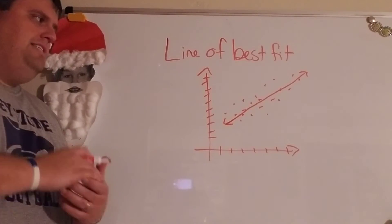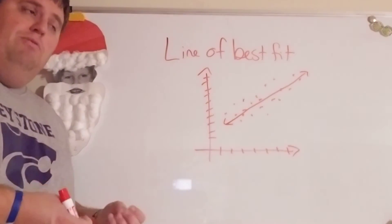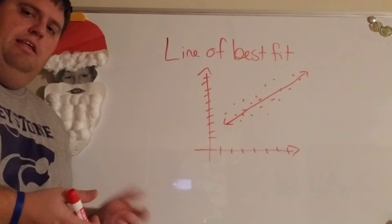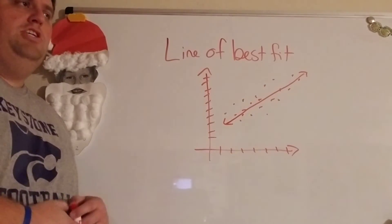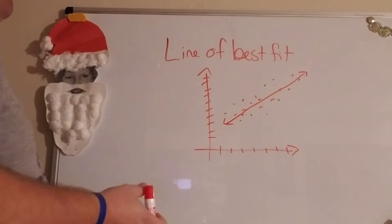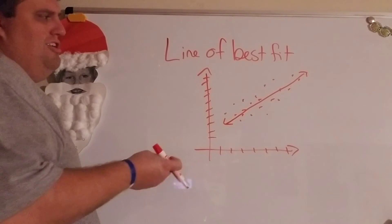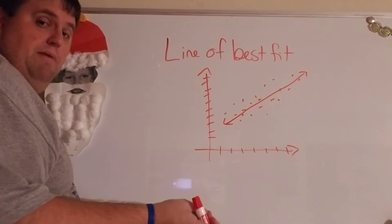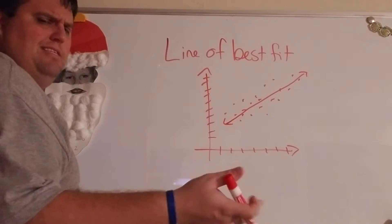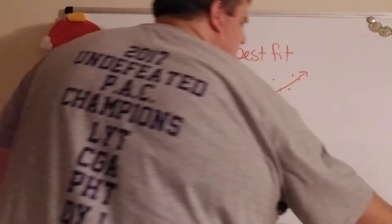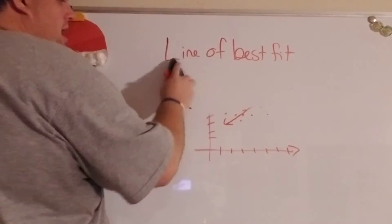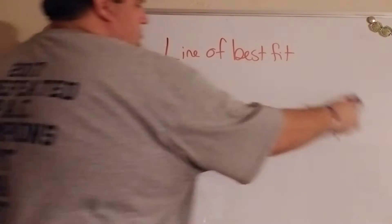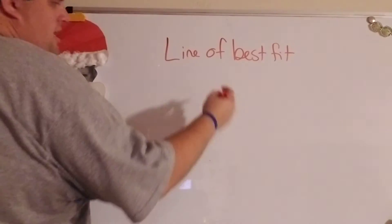Now what we're going to do today is that same idea, except now we want to actually write the equation of that line. We're going to do this in slope-intercept form, because that's obviously the best choice for lines.